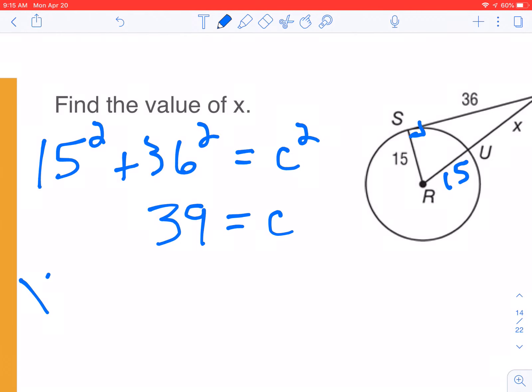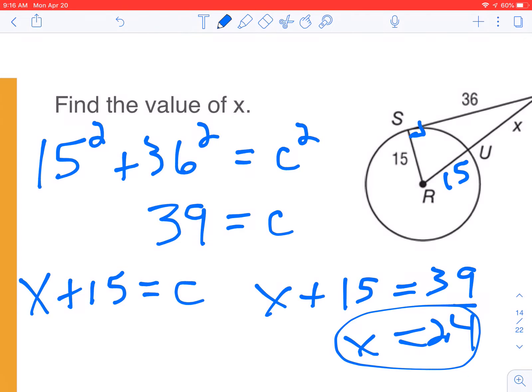I also know that x plus 15 equals c, as we can look at the hypotenuse in the other triangle. x plus 15 equals 39. Subtract 15 from both sides, x equals 24. I would say that would be the most challenging one out of these types of problems. If you get a hypotenuse where you're adding things, just set your equation equal to c and then make the two c's equal to each other.